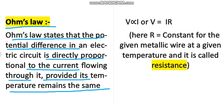Ohm's law states that the potential difference in an electric circuit is directly proportional to the current flowing through it, but the condition is that the temperature remains the same. You can write this statement: the potential difference is directly proportional to the current.